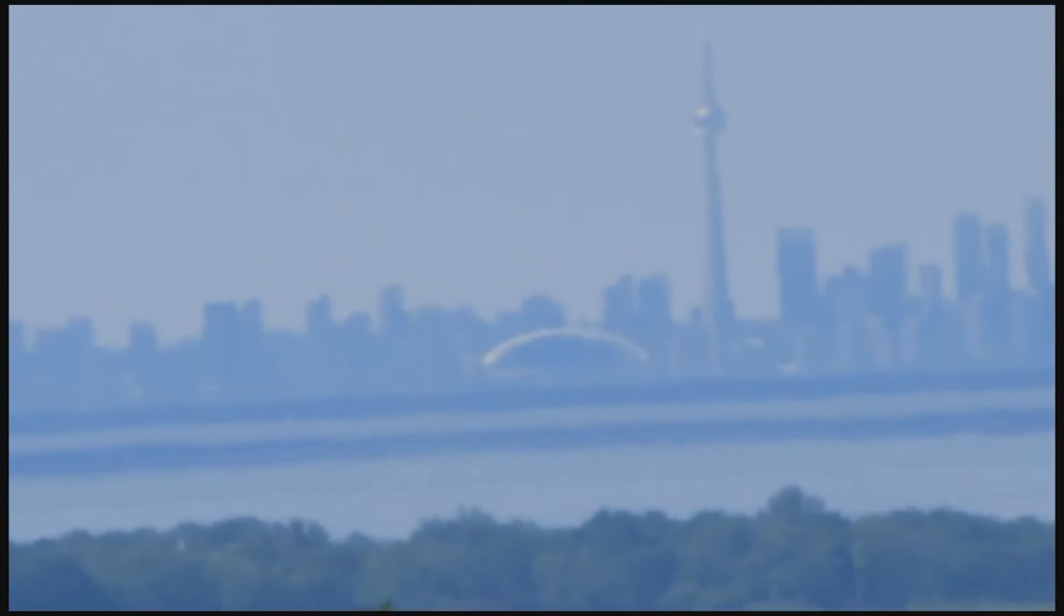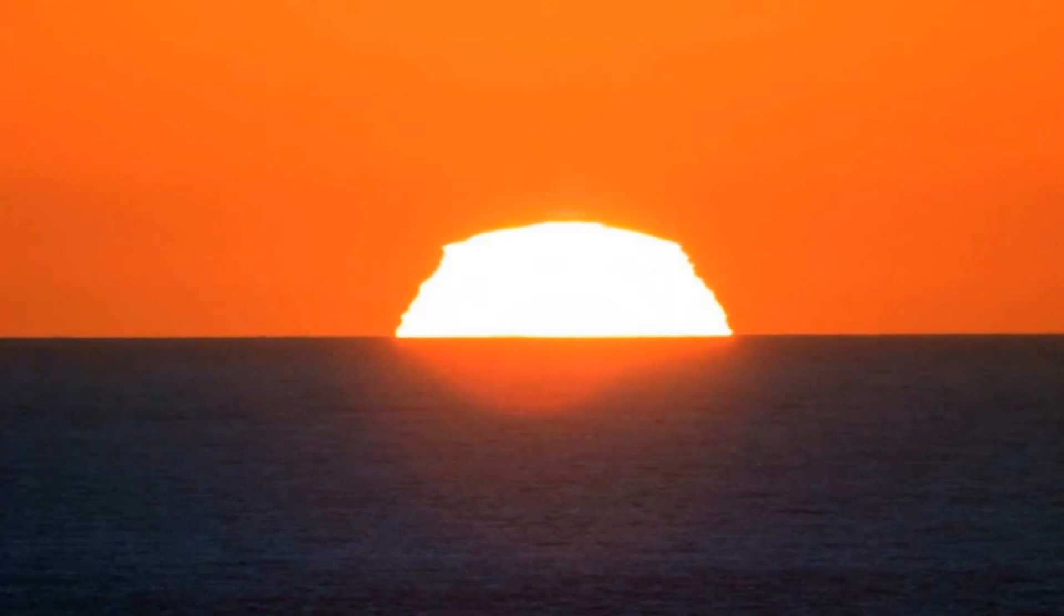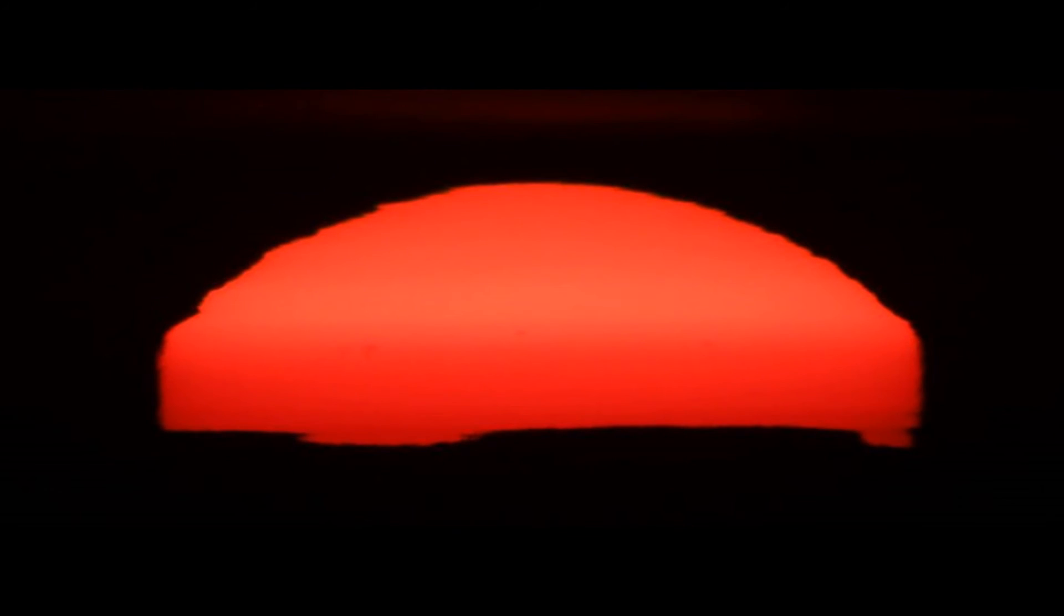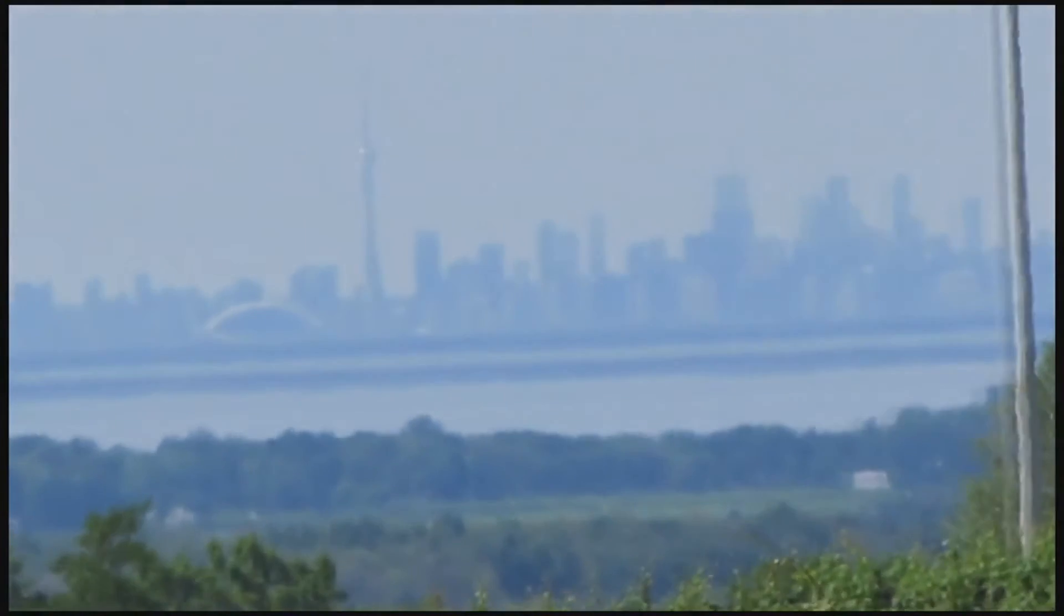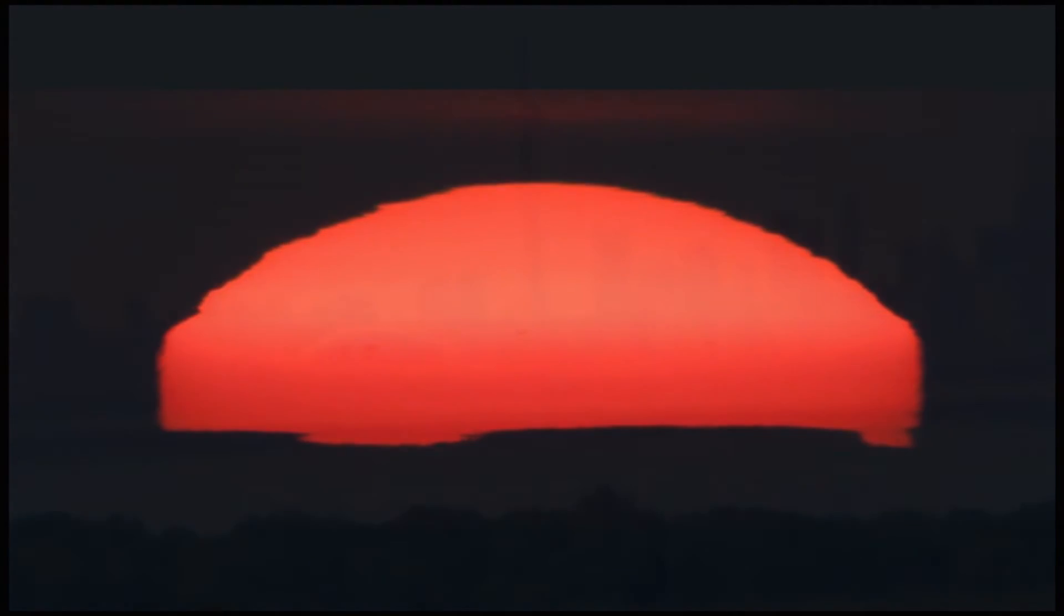Okay, so someone trying to debunk the flat earth will probably try and say that this Toronto skyline is a mirage, but the sun is an exception. Oh no, that's real. There's no mirage there, but we're actually moving away from it, and it's causing it to appear to go down due to the curvature of the earth. If they are willing to say that this Toronto image is a mirage, refracting light upward,